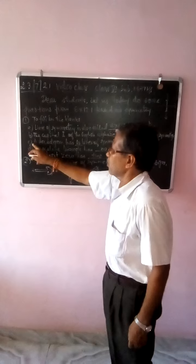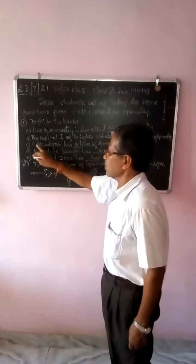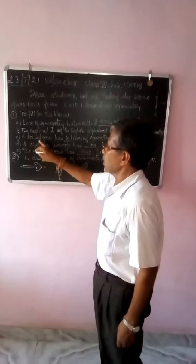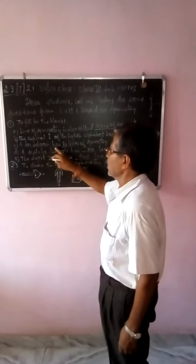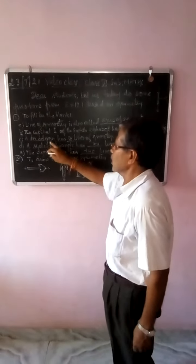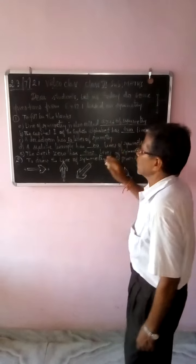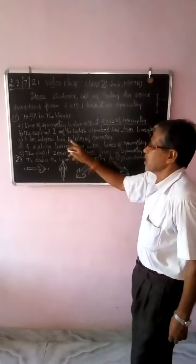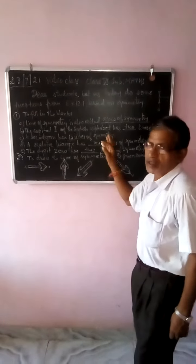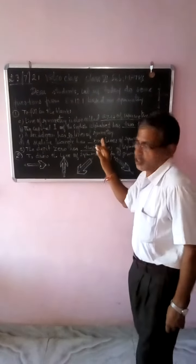Then part C: an equilateral triangle has how many lines of symmetry? It has three lines of symmetry.